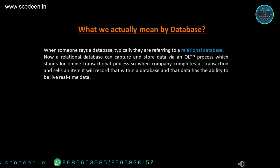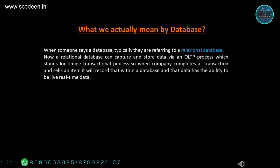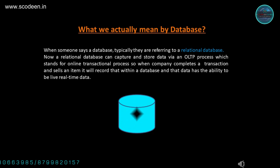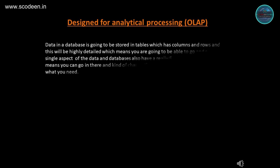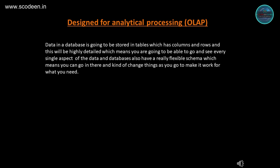So when a company completes a transaction and sells an item, it will record that within a database, and that data has the ability to be live, real-time data. Data in a database is going to be stored in tables which have columns and rows, and this will be highly detailed, meaning you are going to be able to see every single aspect of the data.